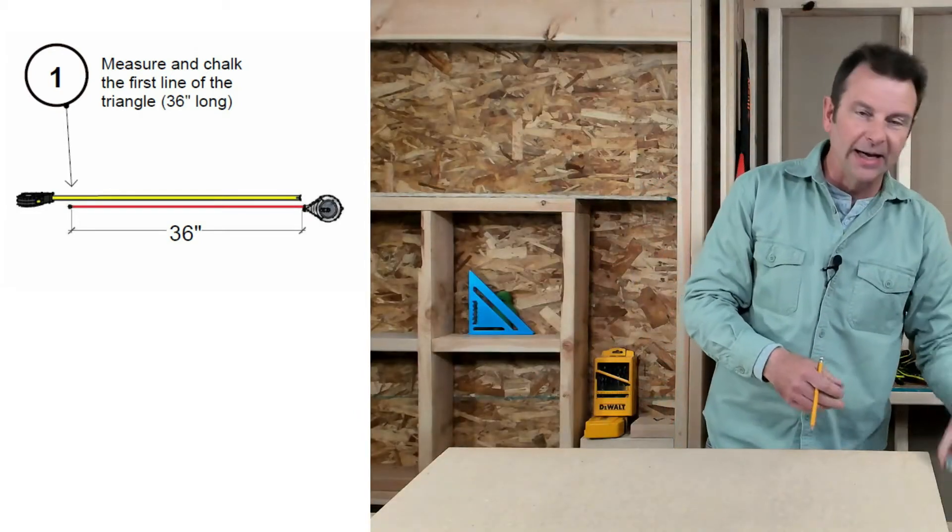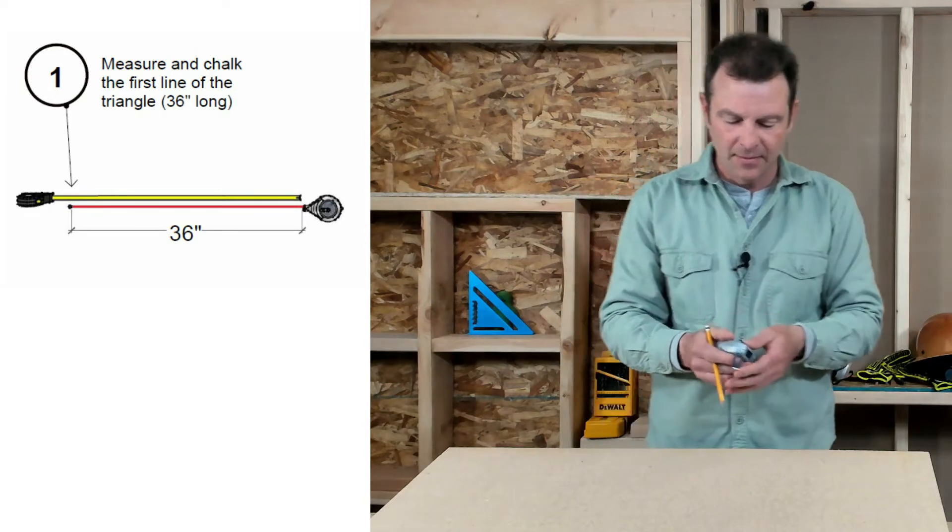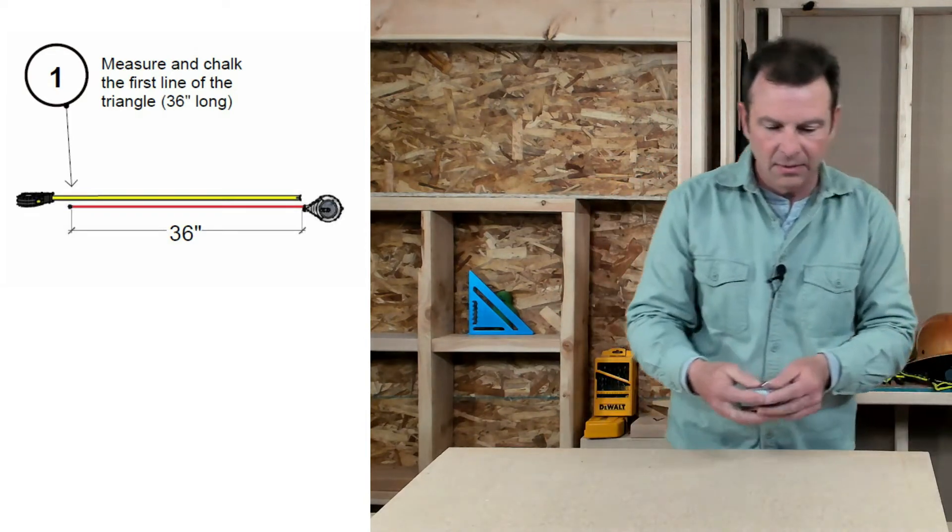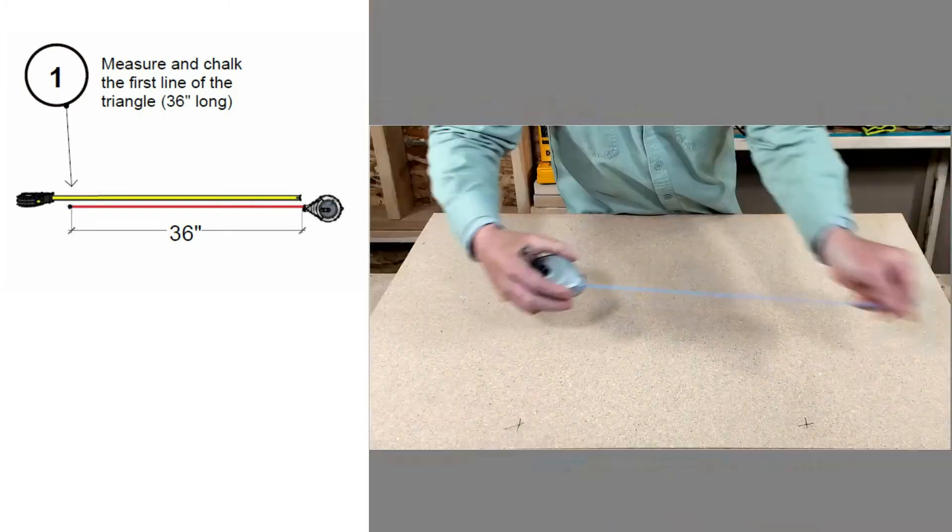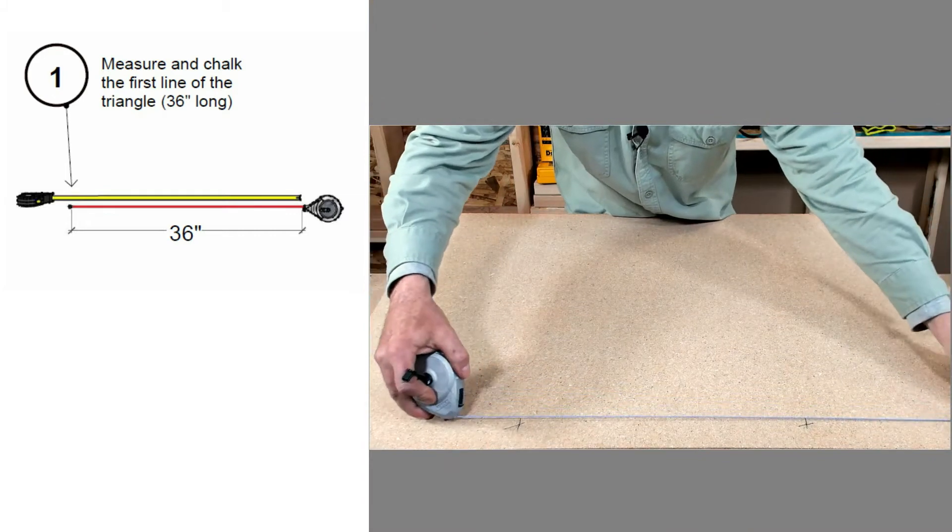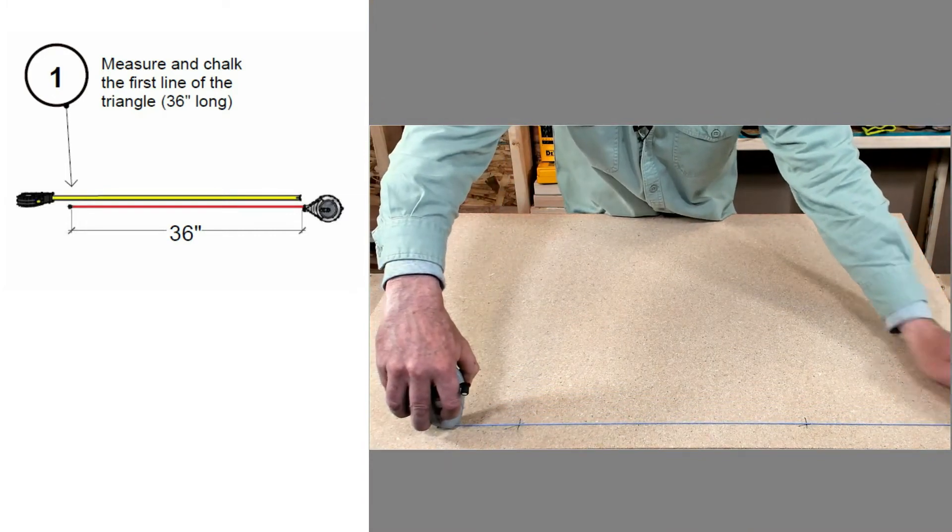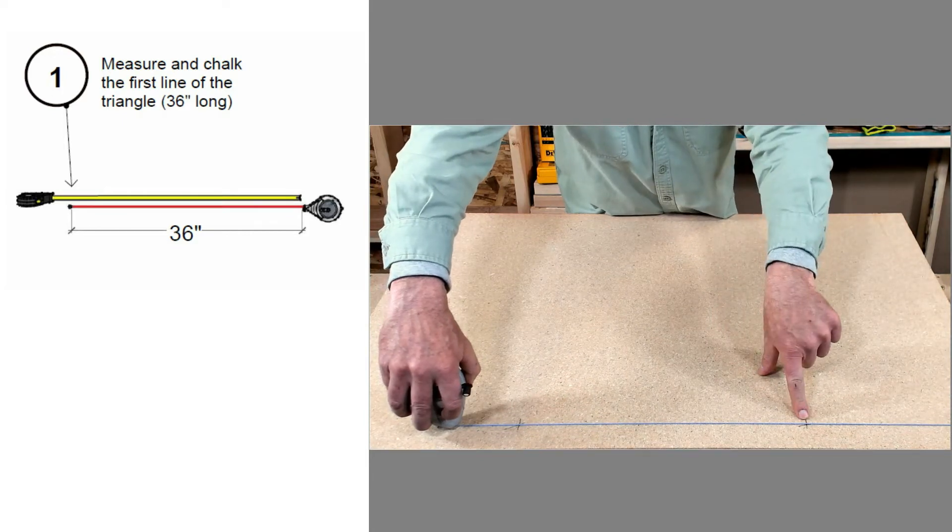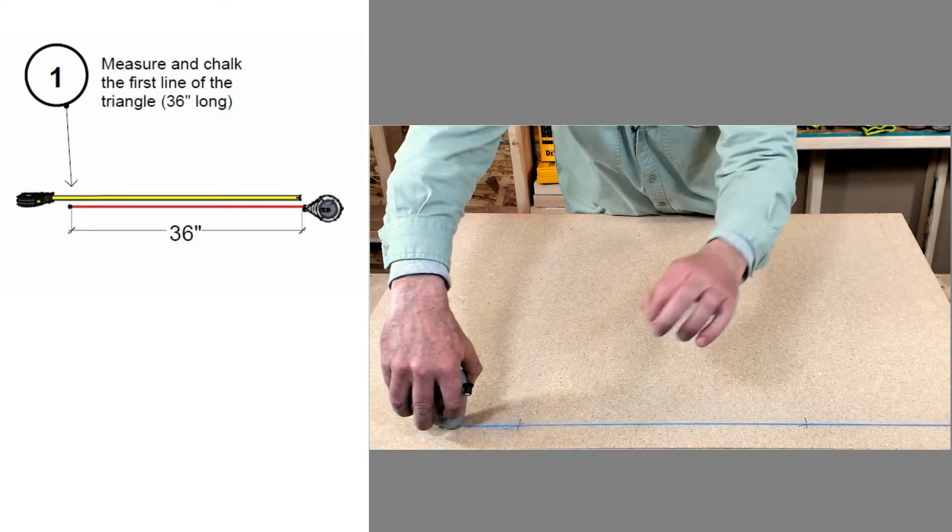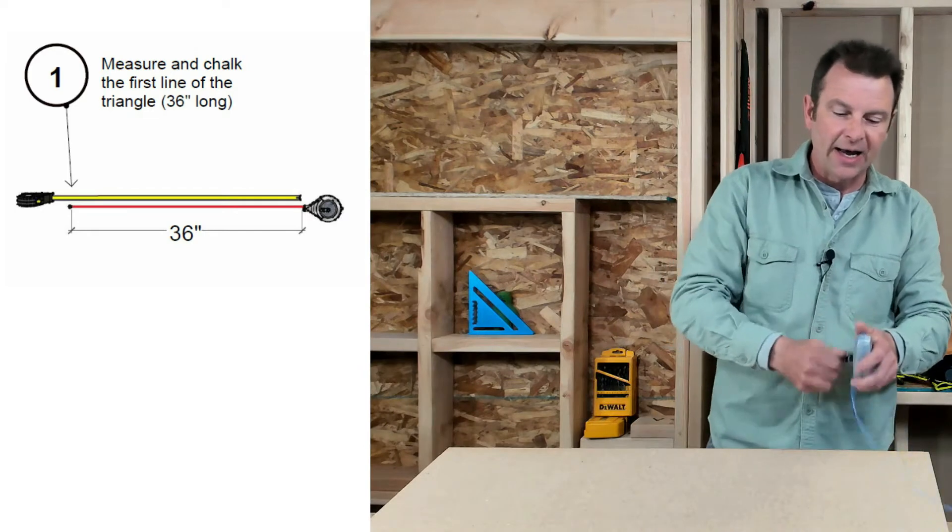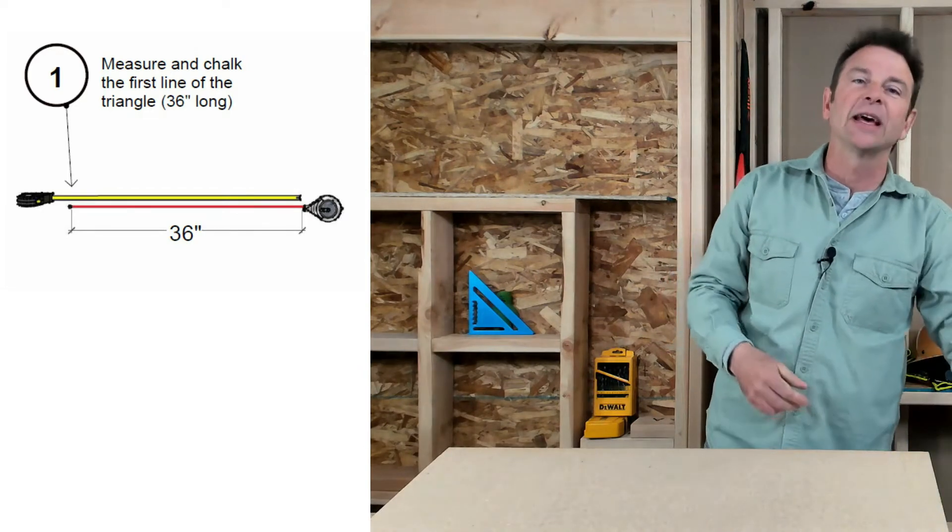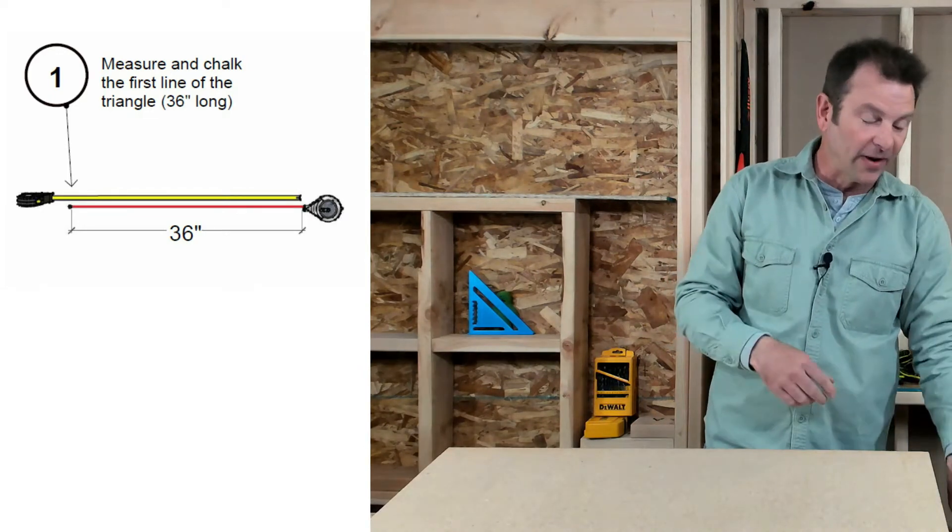That defines my lower leg of my triangle. So let's go ahead and chalk a line there. I'm using the edge of my board here. You will have two people doing this, so someone will hold it directly on this mark. So I have my first leg of my triangle, that's our three in our 3-4-5 triangle.